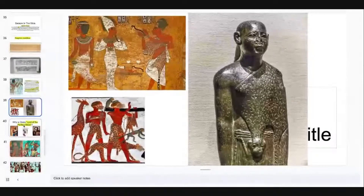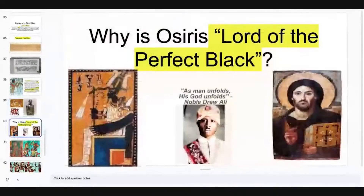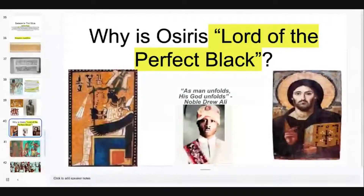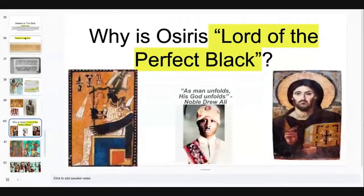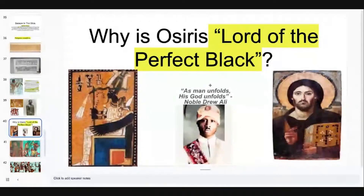Now that we've established that, I want to ask: why is it important to recognize that Osiris is lord of the perfect black? We have a lot of debate right now, and people have accused me of appropriating Native American cultures. Whenever I get into those discussions, I always go back to the fact that the gods of these people reflect the characteristics of the people. That is why it was important to recognize Osiris as the lord of the perfect black. And as Noble Drew Ali said — peace to Noble Drew Ali — 'As man unfolds, his God unfolds.'